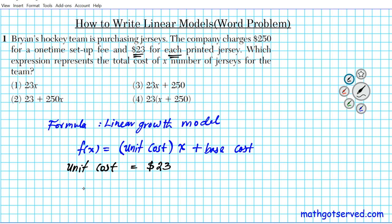What is the base cost? It's the starting amount you have to pay before adding any additional unit cost. The problem says there's a $250 setup fee — that is the base cost, and it's independent of the number of jerseys you want printed.